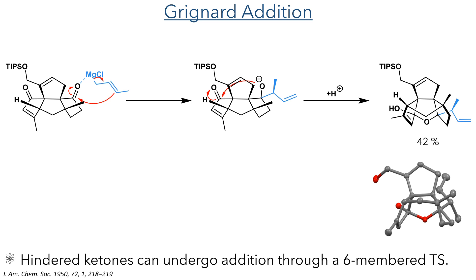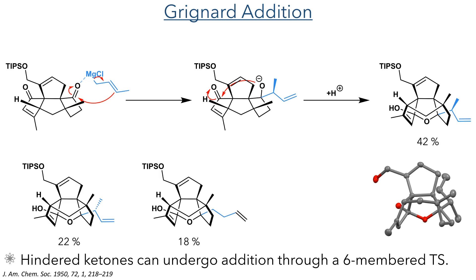Instead, the magnesium first coordinates to the carbonyl, directing the allylic position of the nucleophile towards the electrophilic centre. The tetrahedral alkoxide intermediate then undergoes an intramolecular addition into the carbonyl of the enone system, forming a hemiacetal in a 42% yield upon protonation. In addition to this product, the compound with the opposite stereochemistry on the sidechain was also formed in a 22% yield, together with a direct addition product in an 18% yield.